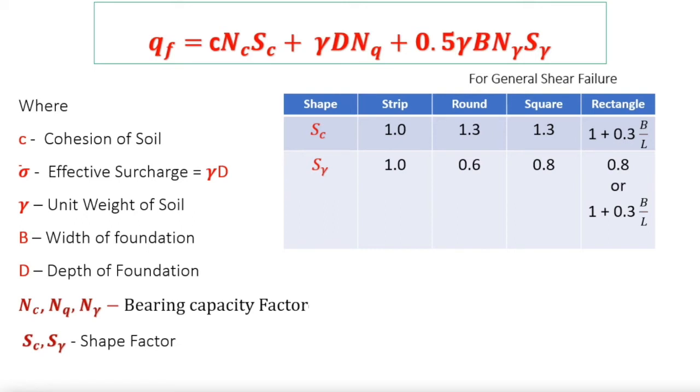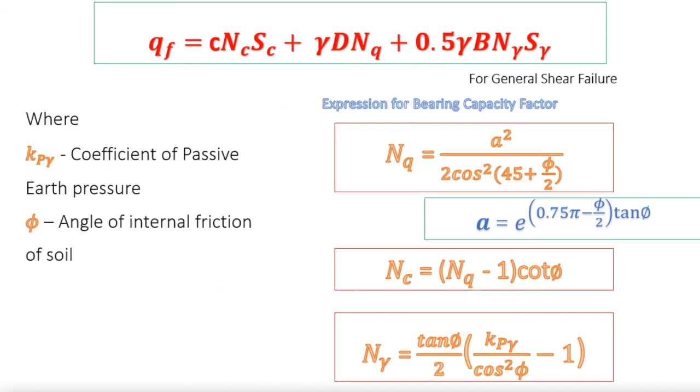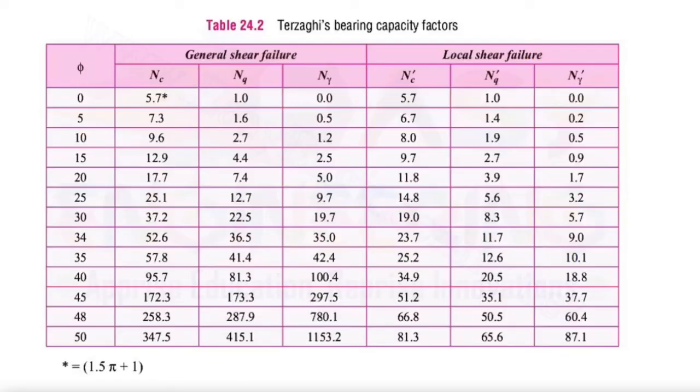Shape factors can be taken from Eurocode 7 depending on the foundation shape and dimensions. Bearing capacity factors are calculated using the following equations which are related to the friction angle of the soil and are applied to the cohesion, surcharge, and self-weight elements of the calculation. Bearing capacity factors can be calculated individually or calculated using tables.